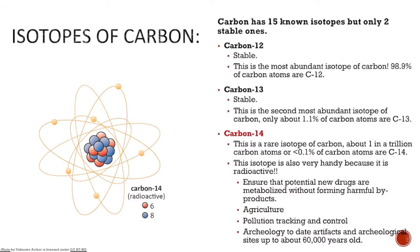Carbon really does have 15 known isotopes, but only two of them are stable. Carbon-12 is the most abundant, making up just almost 99% of carbon atoms.